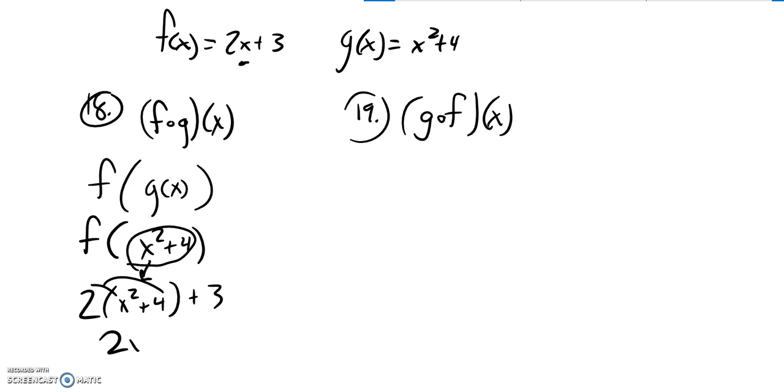So distribute that 2 into there, 2x squared plus 8x plus 3, combine up some like terms, and I get 2x squared plus 11. So there's f of g of x.